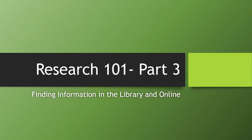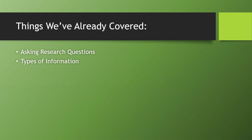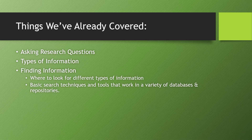Hello and welcome to part 3 of our Research 101 series. In the previous modules, we've discussed how to refine a research topic into a research question, and the different types of information out there and how you can use it for research. In this module, we're going to cover how to find information using library and non-library resources. We're going to discuss where to look for different types of information and demonstrate some basic search techniques and tools that will work in a variety of different databases or repositories.